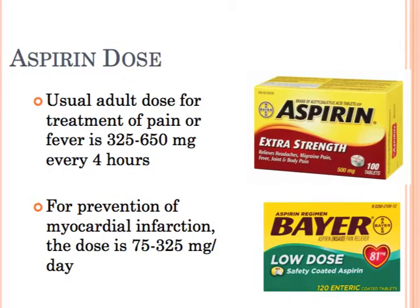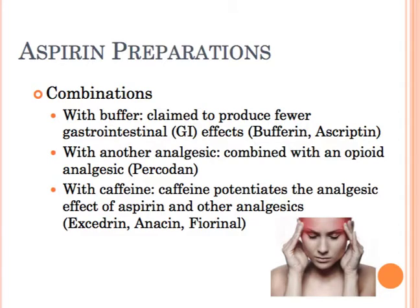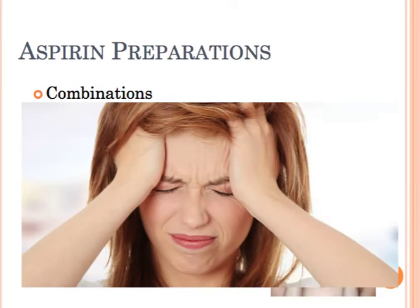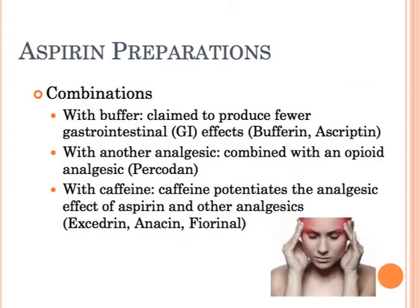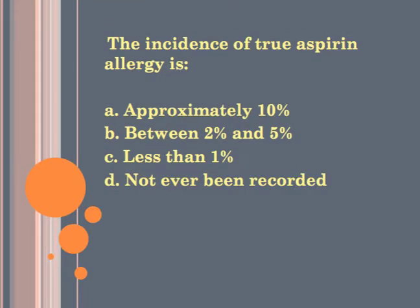The usual dose for aspirin is 325 to 650 milligrams every four hours for an adult. More commonly used for prevention of MI is 81 milligrams once daily. Aspirin can be combined with buffers to reduce gastrointestinal effects, or combined with oxycodone — a narcotic — in a product called Percodan. Another combination is Fiorinal, which consists of aspirin, butalbital, and caffeine, sometimes with or without codeine. You get more analgesia from combinations with hopefully fewer side effects. The incidence of a true aspirin allergy is less than 1%.